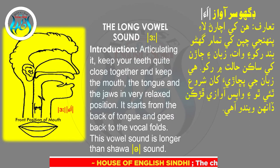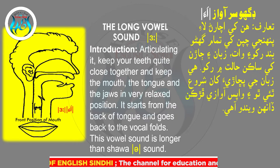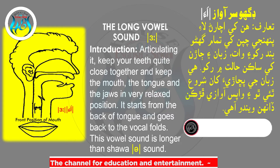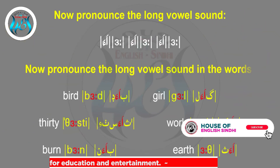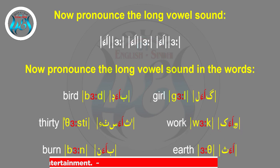The long vowel sound /ɜː/: keep your teeth quite close together and keep the mouth, the tongue, and the jaws in a very relaxed position. It starts from the back of the tongue and goes back to the vocal folds. This vowel sound is longer than the Schwa sound. Now pronounce the long vowel sound.